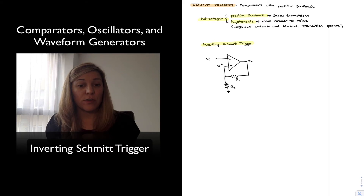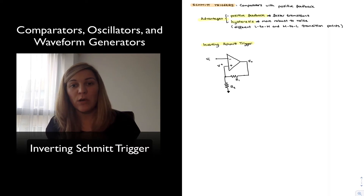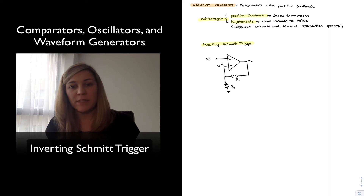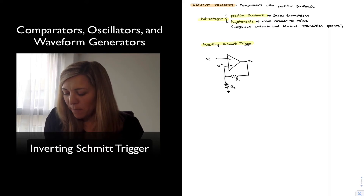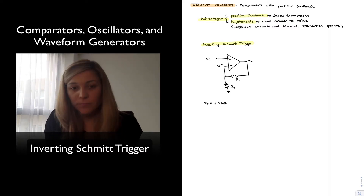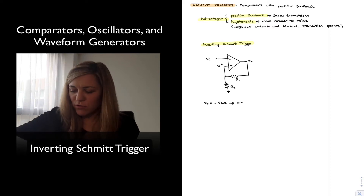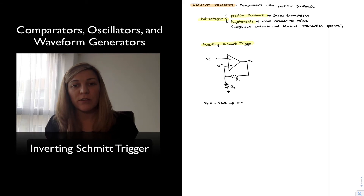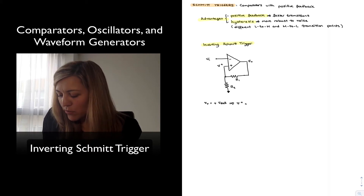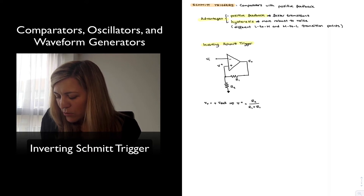There are two possible output states: when the output is high, or when the output is low. Let's imagine this is an op-amp Schmitt trigger with saturation voltages of ±Vsat. When Vout is sitting at the positive saturation voltage, we can see that because Vout is being fed back into the positive input terminal via a voltage divider, the value on the positive input terminal equals R2 divided by (R1 + R2) times Vout.